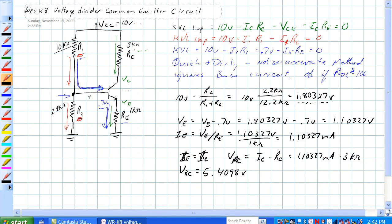Okay, so we have 5.409 volts from here to here, and that's voltage RC. Voltage RE is equal to 1.10327 volts.